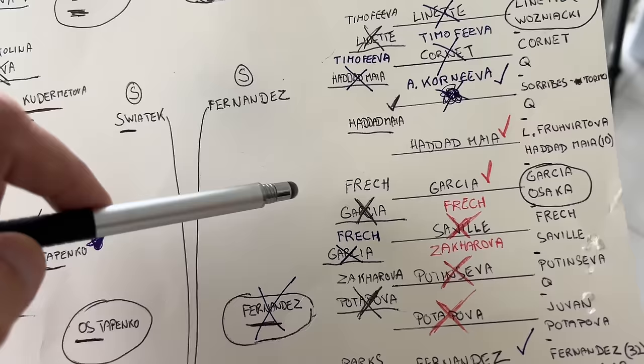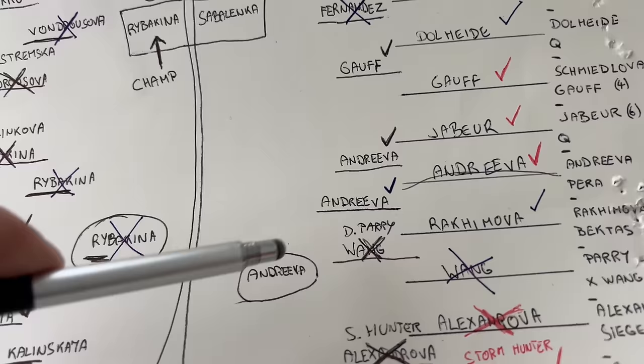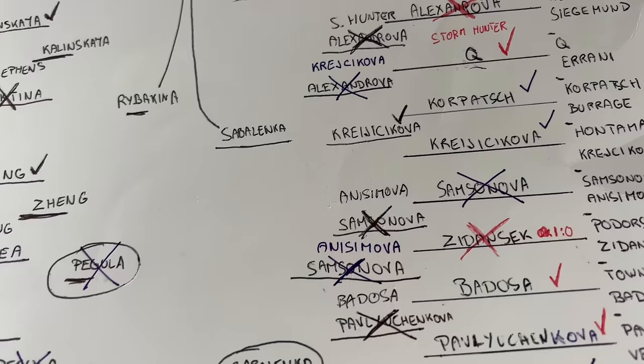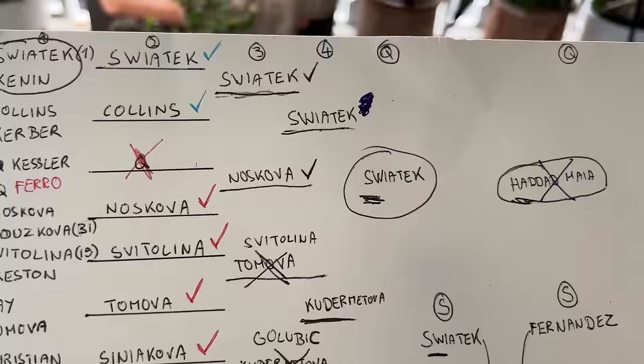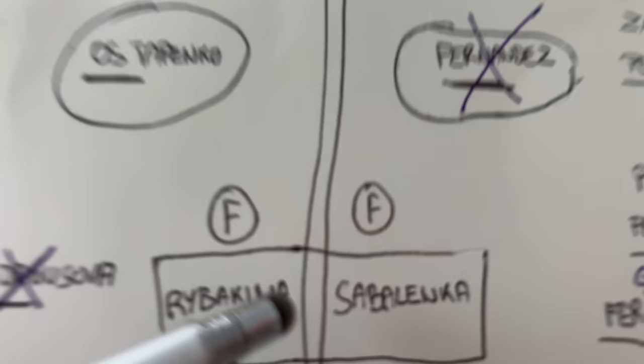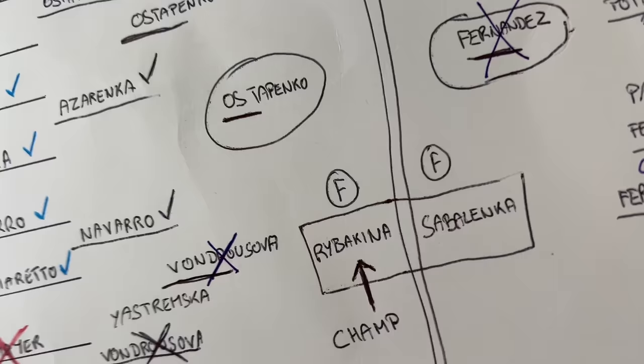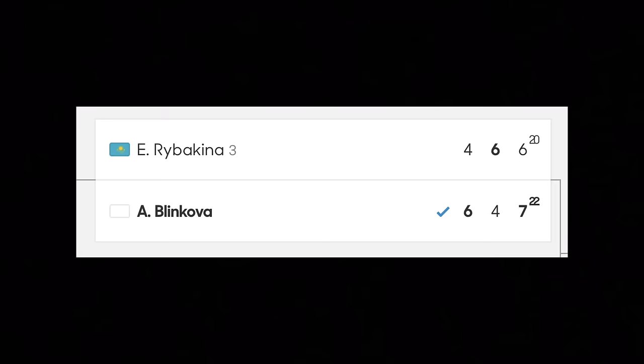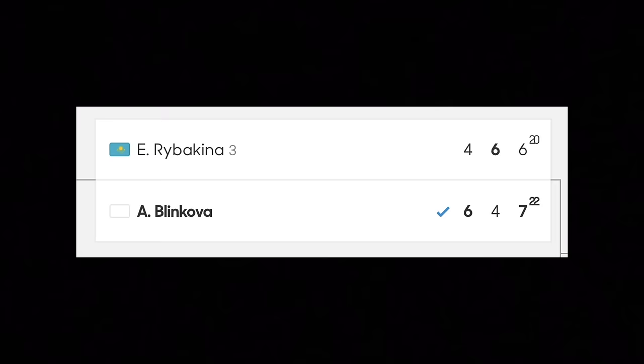The bottom half of the women's draw had so many seeds go out. Kostyuk against Timofeyeva in the fourth round — who would have thought? Frech going to the fourth round, Anisimova going to the fourth round. On the top half I'm still doing pretty well: Iga is in it, Ostapenko, Kaliniskaya. But look at who I had as champion — Rybakina — and she lost in what may have been the best match of the whole tournament: a 22-20 third-set tiebreaker. That match right there is an advertisement for WTA tennis, and to me it was the most exciting match of the entire Australian Open draw.